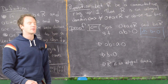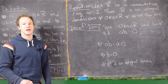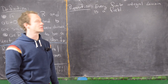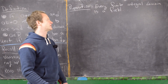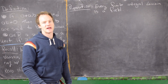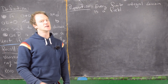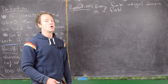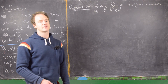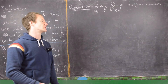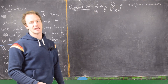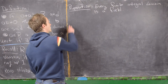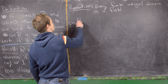That finishes the first proof. The next result we want to prove is that every finite integral domain is a field. Recall that a field is an integral domain where every nonzero element has a multiplicative inverse.